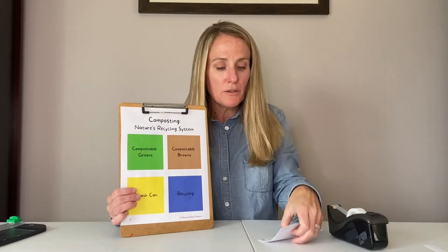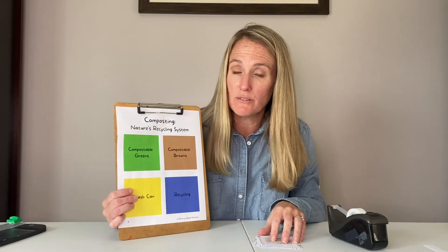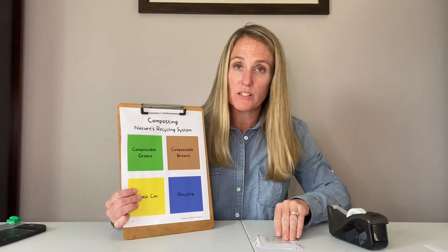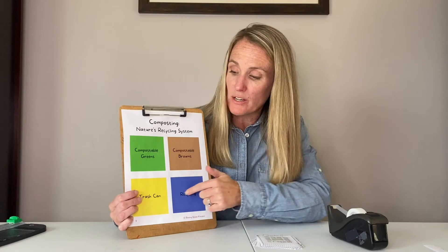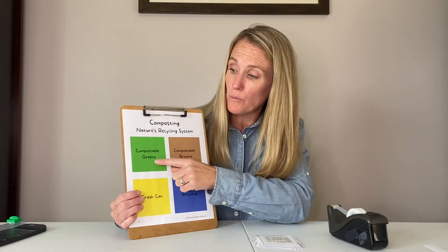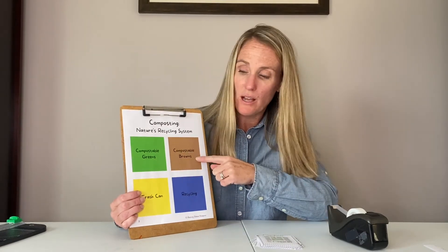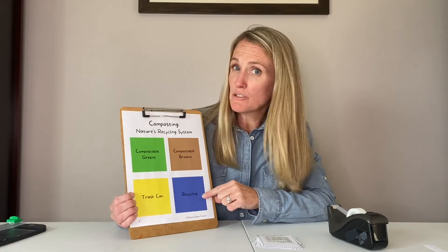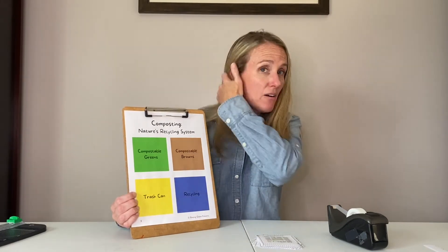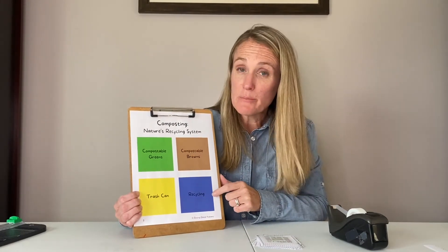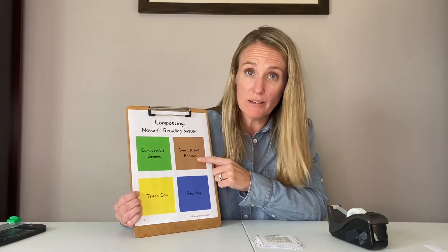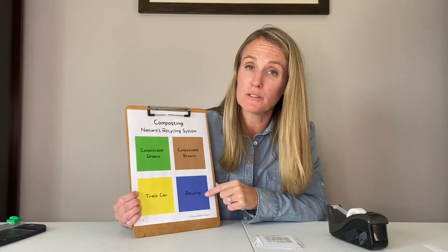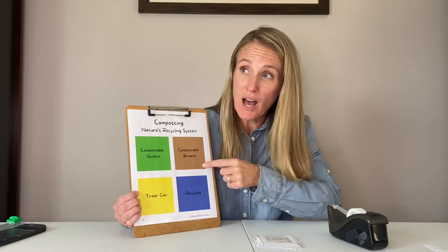We're going to play a little sorting game — I'll use tape to make it easier to see. Go through each card and figure out where it falls: compostable green, compostable brown, recycling, or trash. The recycling category can be tricky, because many compostable items could also be recycled.